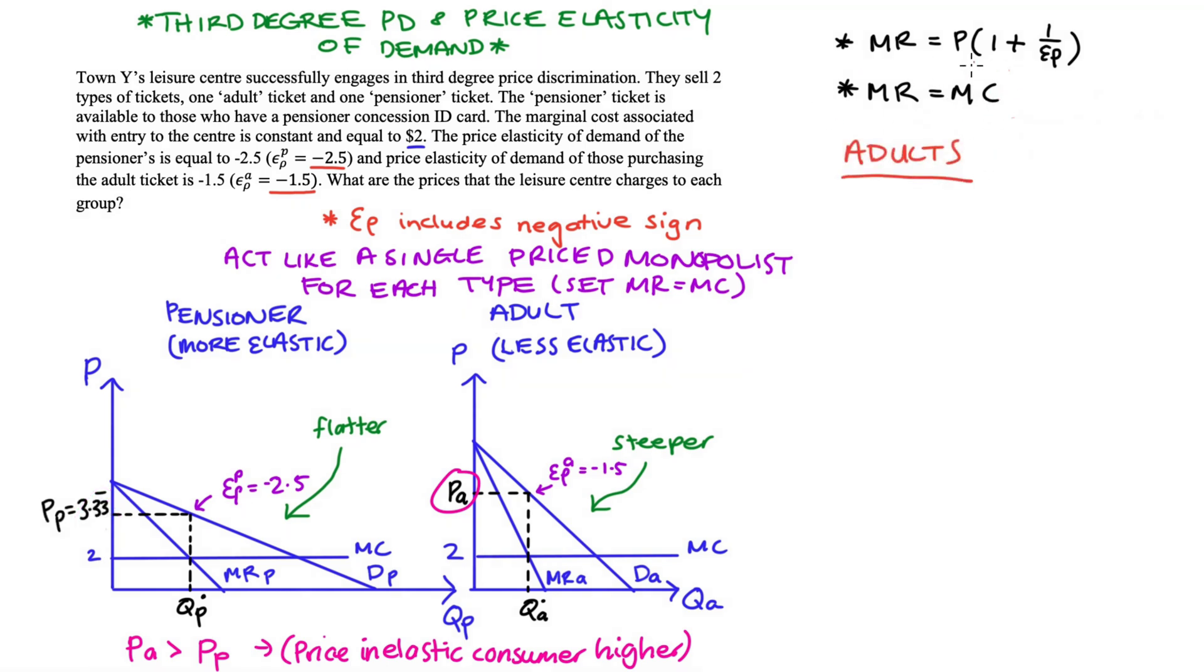How about our adults? We're just going to go through the same steps. We're going to use that marginal revenue is equal to marginal cost profit maximizing condition, but sub in that expression for marginal revenue, the price associated with the adults multiplied by one plus one over epsilon P for our adults is equal to the marginal cost. Substituting our values in, we get that price variable multiplied by one plus one over negative 1.5. And that's equal to two. That's our marginal cost.